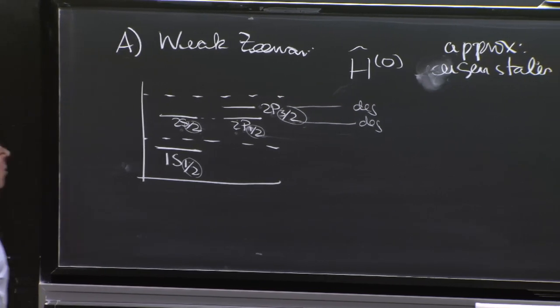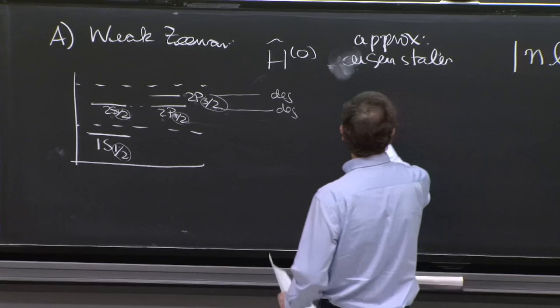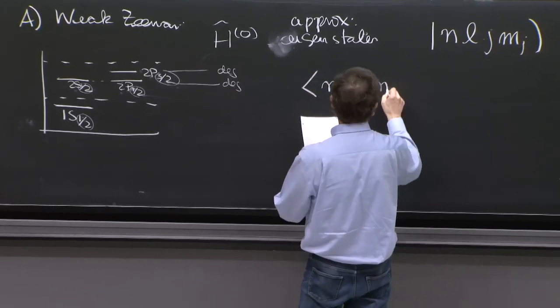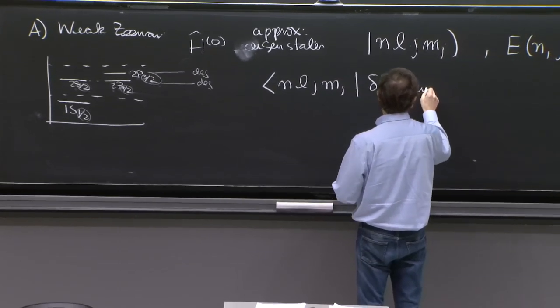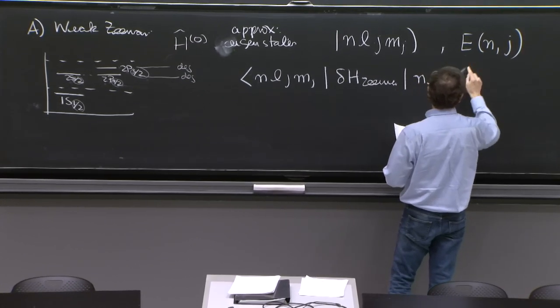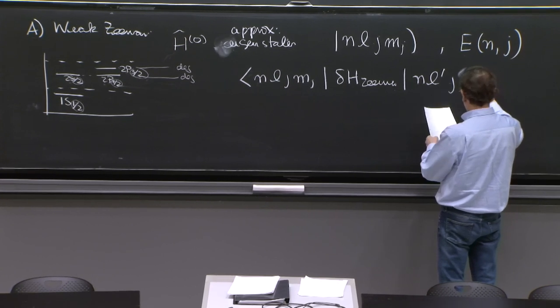So in principle, when we do the Zeeman splitting, we may have to consider the full matrix N, L, J, Mj, delta H Zeeman, N, L prime, J, M prime j.